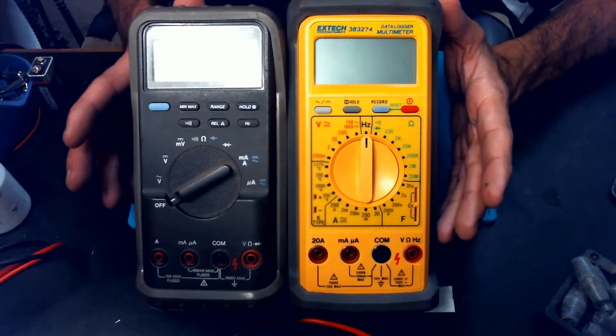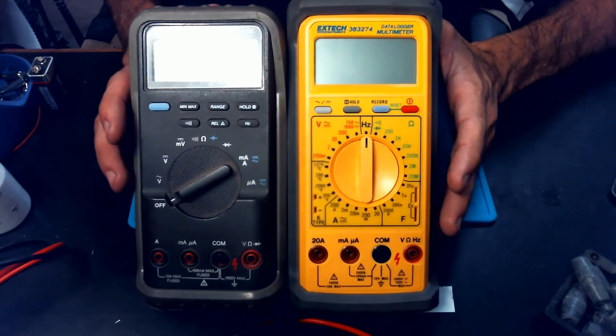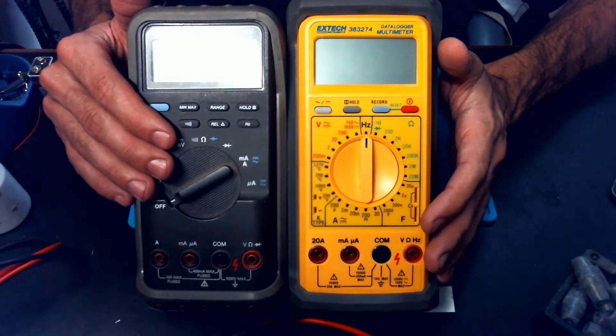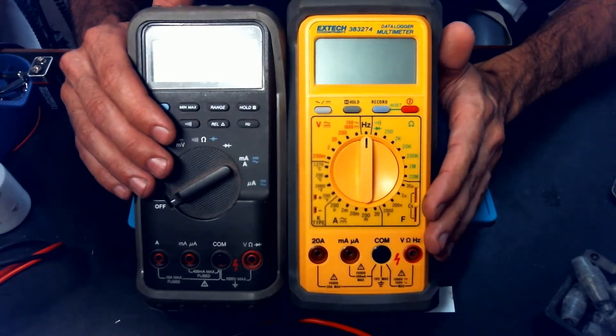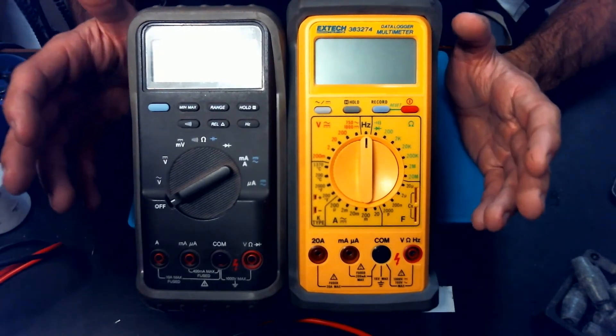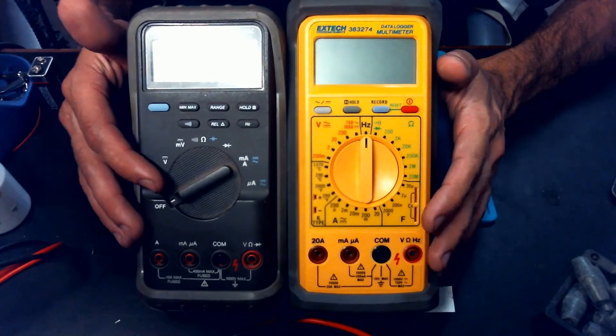So today's video is going to be one that I've been wanting to make for a while, and that is comparing an auto-ranging multimeter to a manual-ranging one. A lot of people may already have their preferences on this, but if you don't, we'll go through the pros and cons of each.